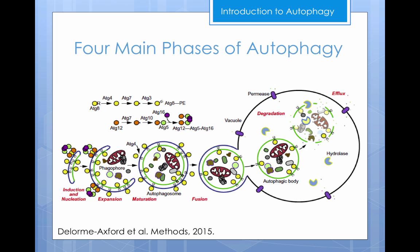Maturation of the phagophore results in the formation of the mature autophagosome. The autophagosome subsequently fuses with the vacuole in yeast or the lysosomes in mammalian cells. Then the cargo within the autophagosome is targeted for degradation, and those macromolecules are recycled by the cell and used for other processes.